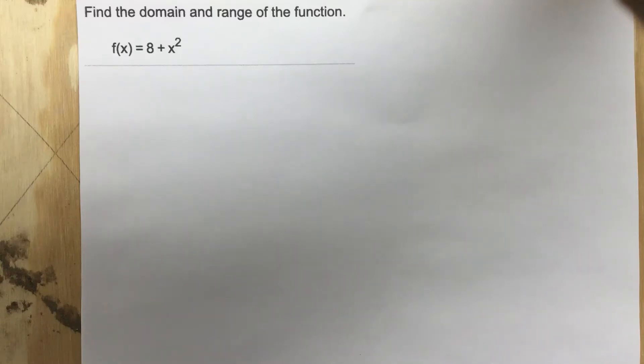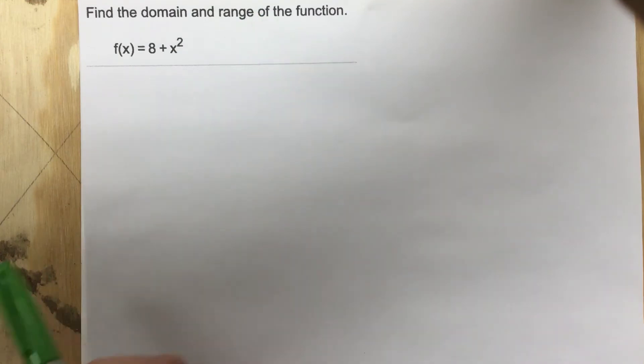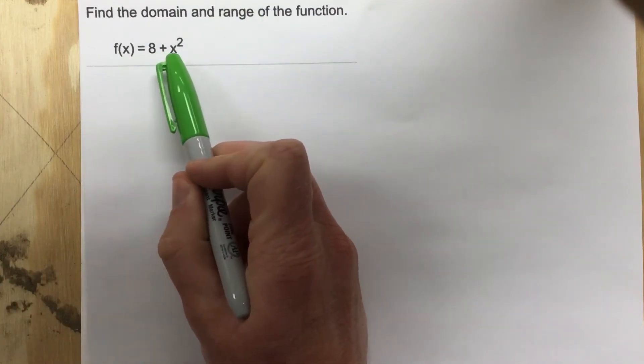This is problem number one from section 1.1. The problem says find the domain and range of the function. It gives you the function f(x) equals 8 plus x squared.